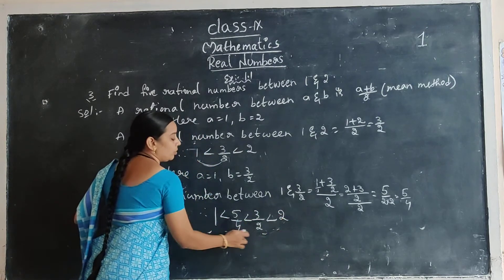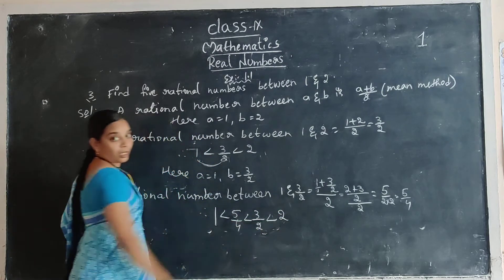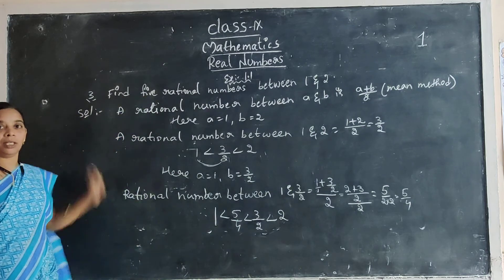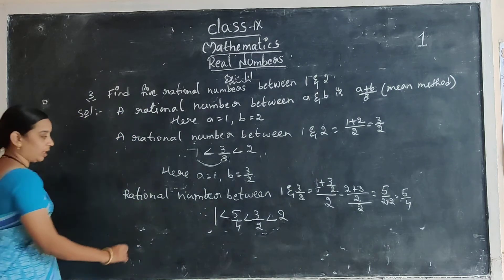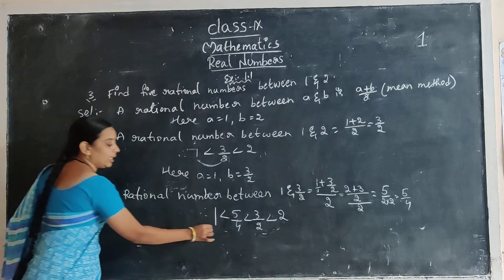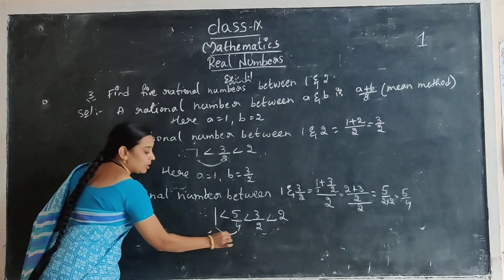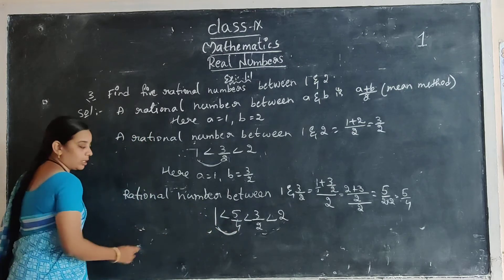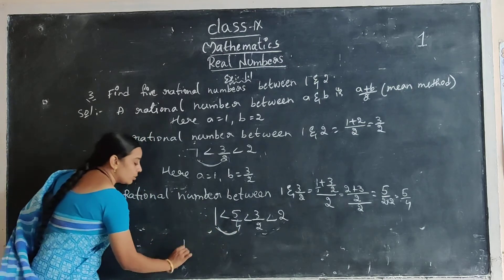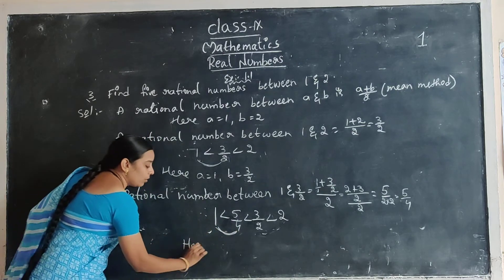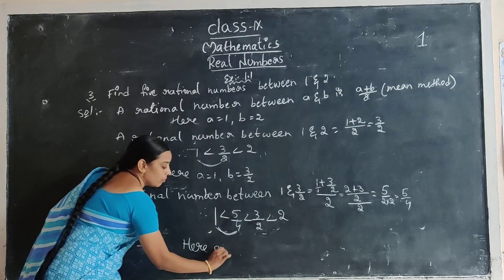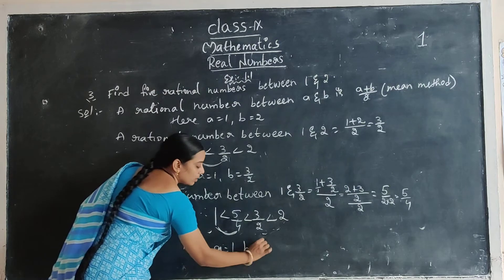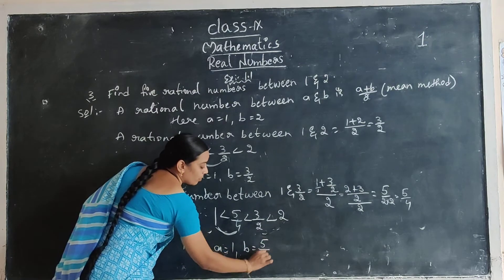In between 1 and 2 you got 2 rational numbers. 3 more we want to find. Again in between these two we want to find 1 more rational number. So here A value is 1 and B value is 5 by 4.